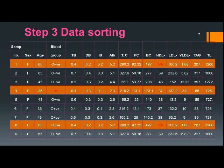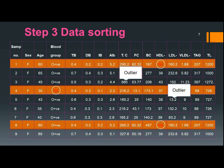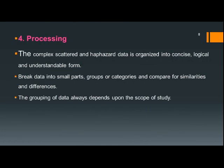Here you can see some data which has not been analyzed — three entries are identified that need to be deleted to get high-quality data. Outliers are also present and must be deleted. Once we have organized and accurate data, depending upon the type of study, we divide or break the data into smaller parts, groups, or categories, and then many comparisons can be made for similarities and dissimilarities.